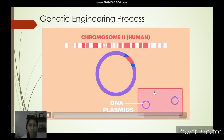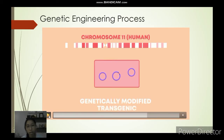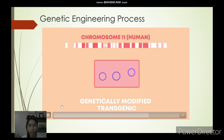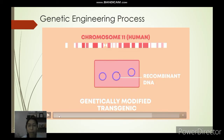After joining with ligase, the plasmid with the insulin gene is reinserted back into the bacterium. That bacterium is now genetically modified — a GMO or transgenic organism. This bacterium now contains recombinant DNA: a combination of the bacterial DNA (violet) and the human insulin gene (red). The resulting DNA is called recombinant DNA, which will direct the production of insulin.